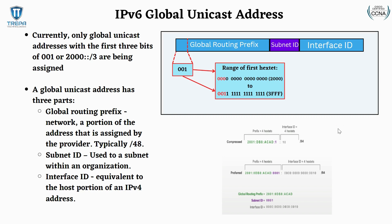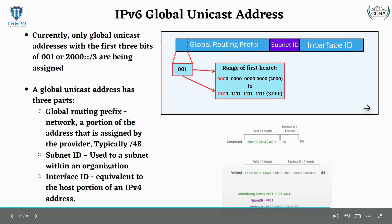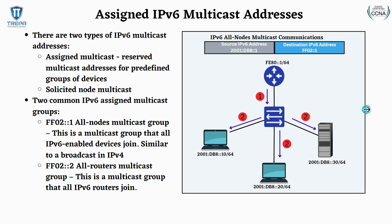Now we have multicast addresses, which are very important for you to recognize on the exam. Since we don't use broadcast in IPv6, we actually have a designated multicast group that all IPv6-enabled devices have to listen to, and that's going to be FF02::1, called the all-nodes multicast address. If you see the FF02 prefix, that is going to be a multicast address.